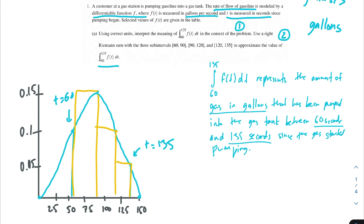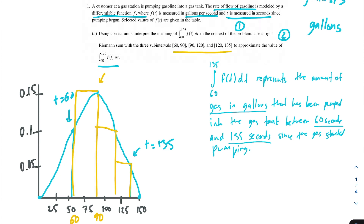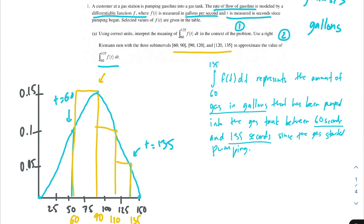For the first rectangle, which covers the area from 60 to 90, we are going to use f of 90 as our height, as opposed to f of 60. If our rectangle had used f of 60, that would have been a left Riemann sum. We are doing a right Riemann sum. Also notice that I'm only using the three subintervals mentioned in the problem: from 60 to 90, from 90 to 120, and from 120 to 135. It didn't ask for the area from 0 to 150 — just from 60 to 135, so be precise with your bounds.